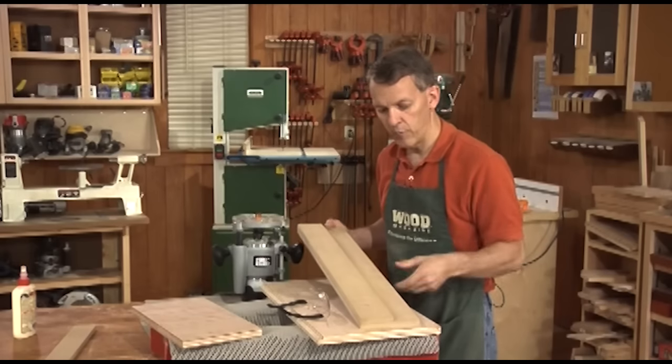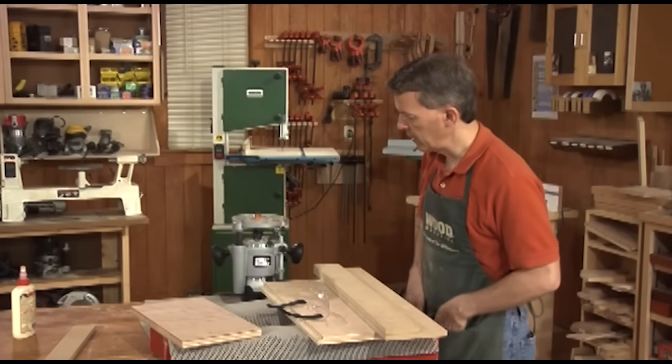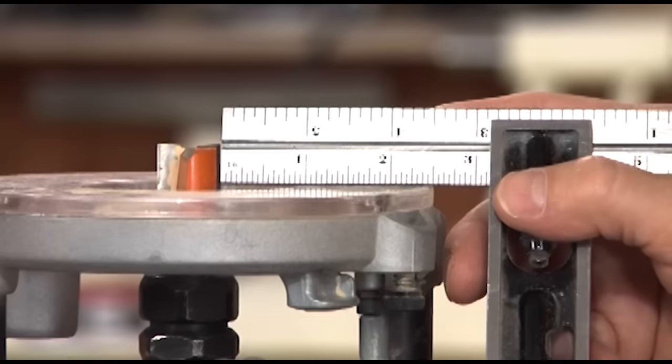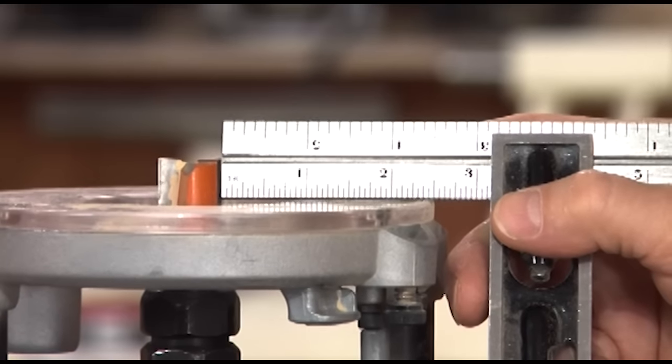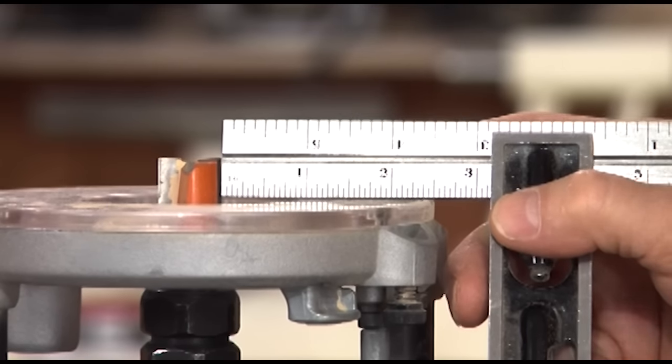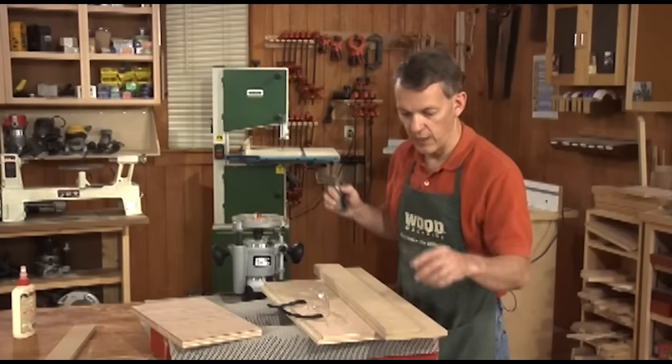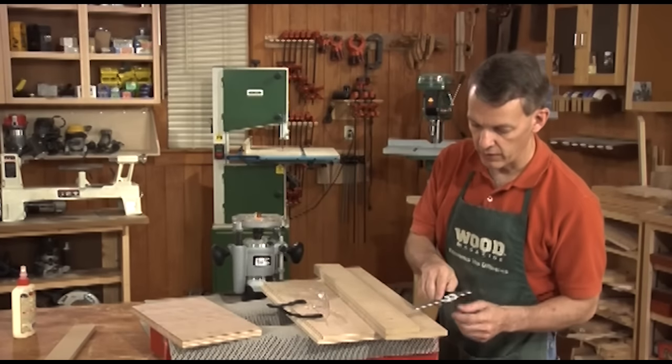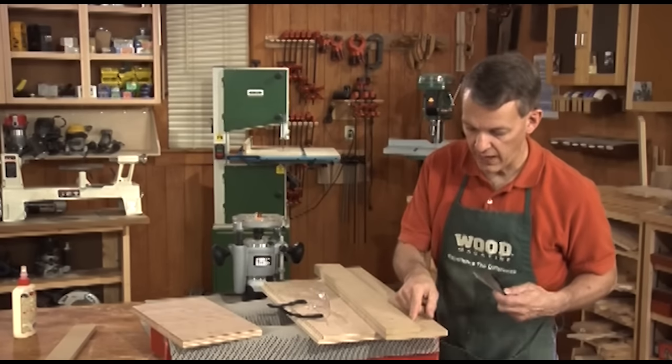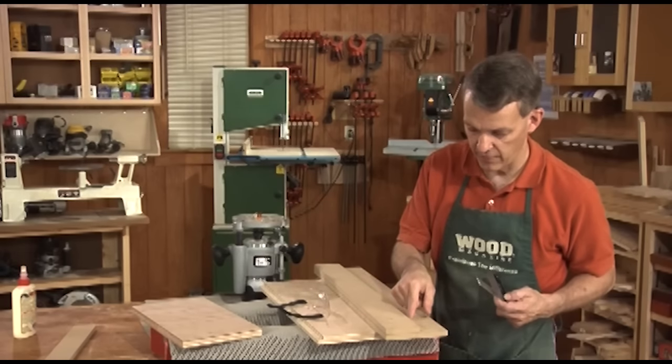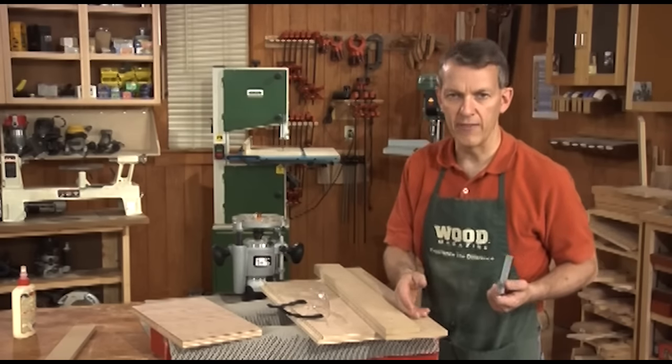And the width of the base is determined by the distance from the cutting edge of the bit to the edge of your router base, two and a half inches in this case. So, when I made this jig, I made it so it extended a little more than two and a half inches past the fence. Let's call it two and a half inches.